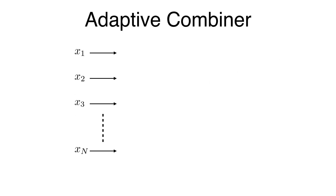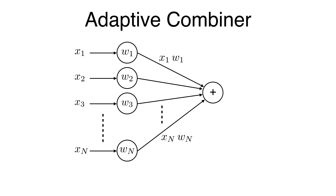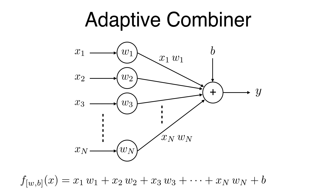To create a function for our machine learning algorithms, we're going to have a bunch of inputs — like our dendrites — and we're going to weight each of those inputs: x1 gets weighted by w1, x2 by w2, and so on. Then we sum up all those weighted values: x1·w1 plus x2·w2 plus x3·w3, etc. We also add an arbitrary scalar b. This structure is called an adaptive combiner. The concise way to write x1·w1 + x2·w2 + ... + xn·wn is x dot w, so the expression for an adaptive combiner is x·w + b.